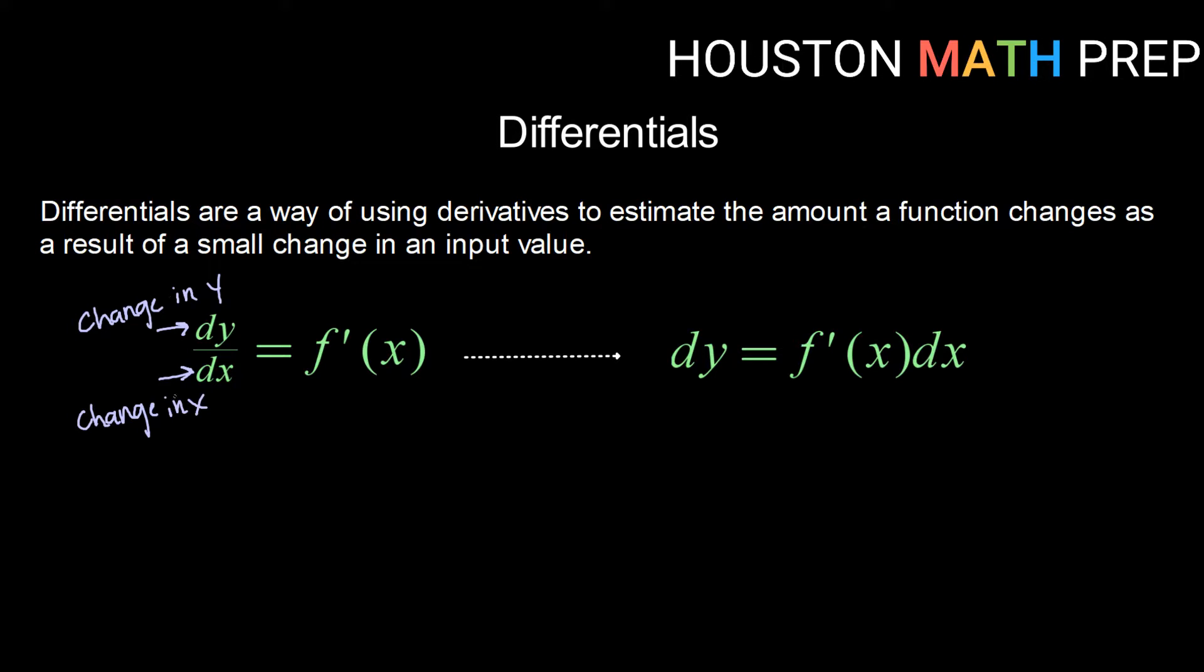If we think of these separately, then we could think of solving this statement for dy. We would do that by multiplying dx over to the other side and we would result in the differential dy equals f prime of x times dx. This equation then allows us to measure the amount of change in y that would result from a particular amount of change in x.